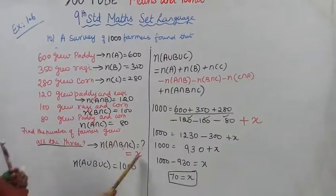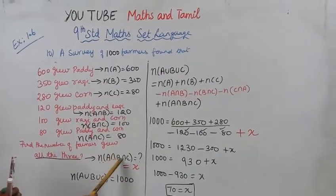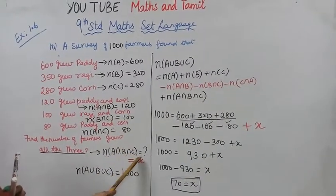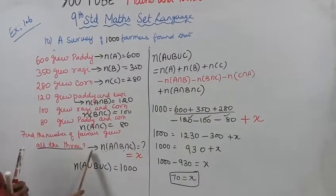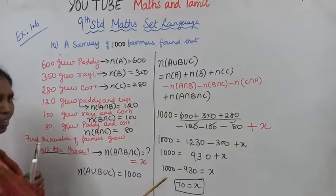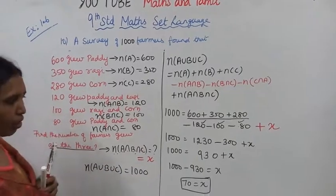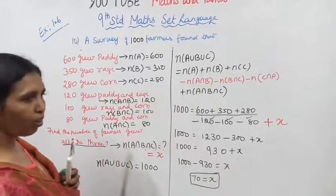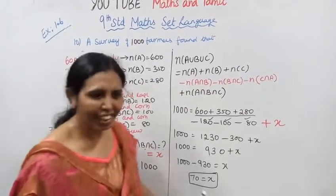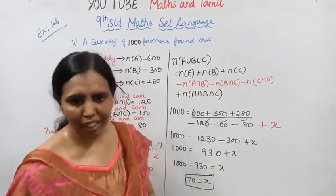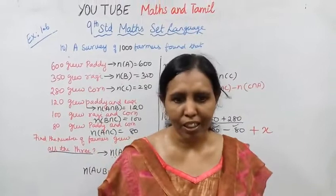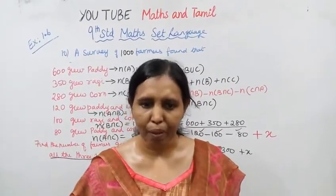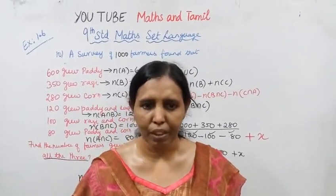So N(A∩B∩C) = 70. Therefore, 70 farmers grew all three crops. Okay, you practice. Please subscribe to the channel and hit the subscribe button.